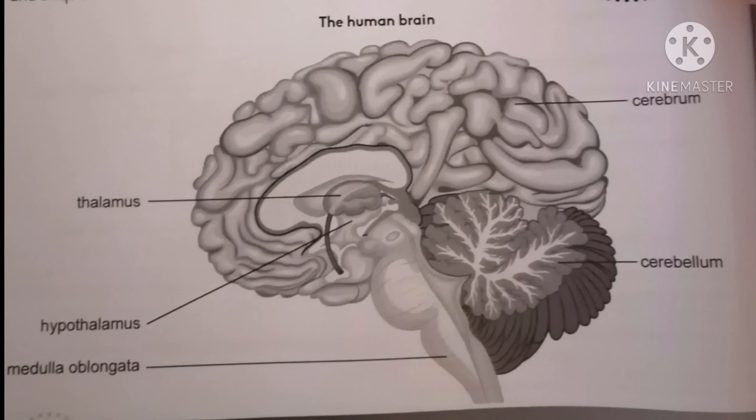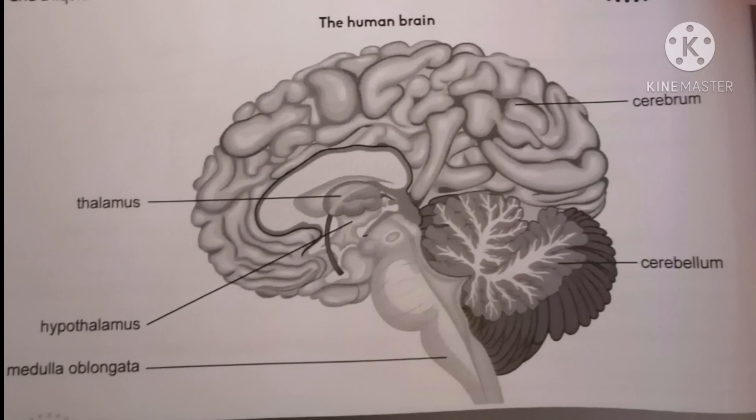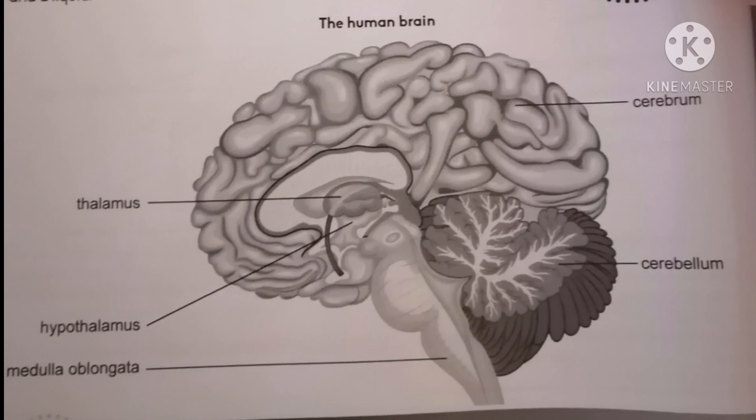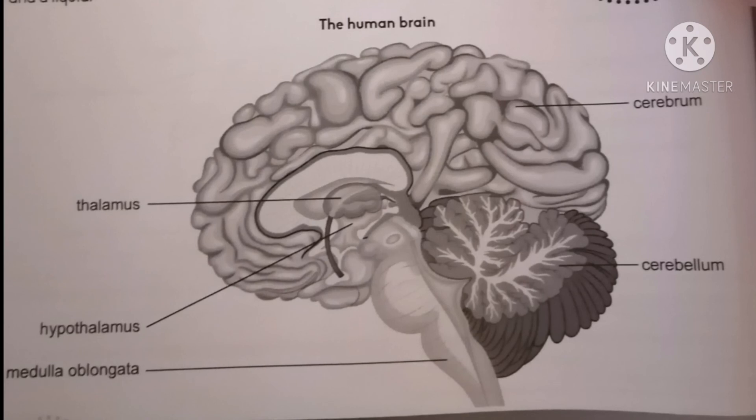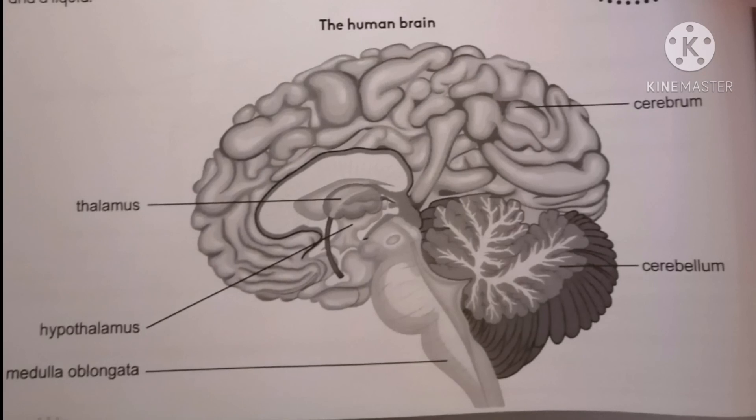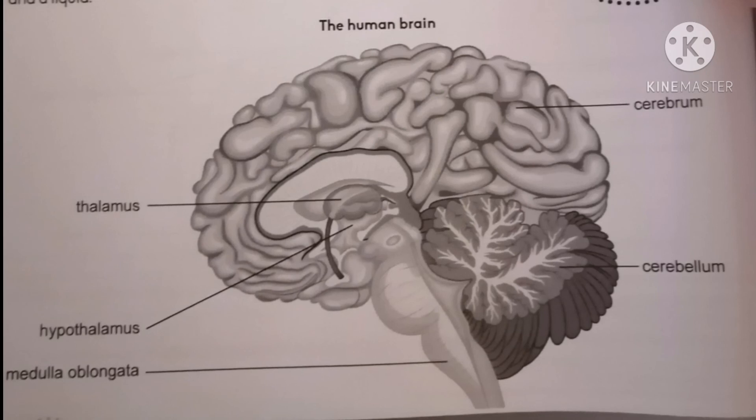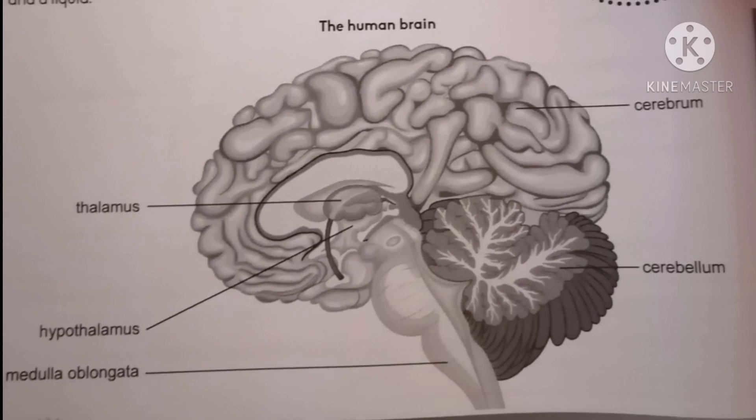On the left hand side, the first part you would see the hypothalamus, that controls amongst others sleep, feelings of hunger and thirst, aggression, and reproduction. The last part you would see the medulla oblongata, and its function is to control reflexes, for example breathing and heart rate, and it extends into the spine.